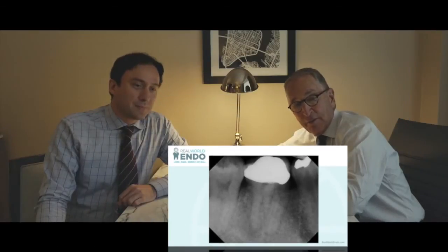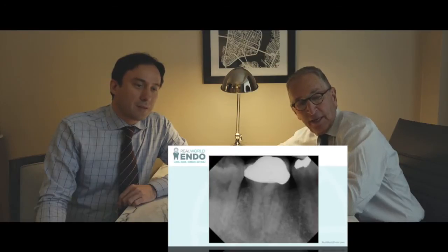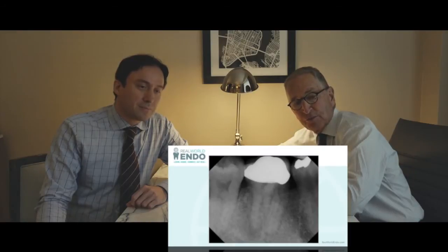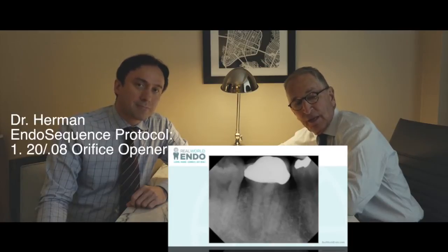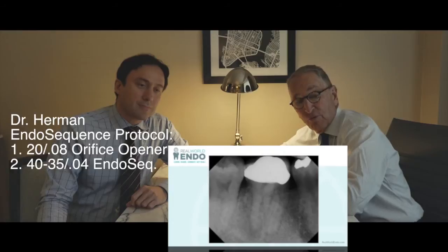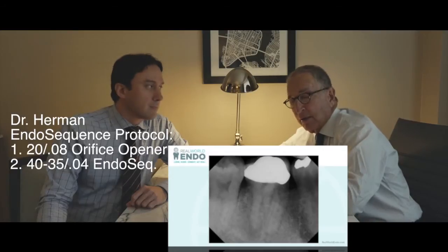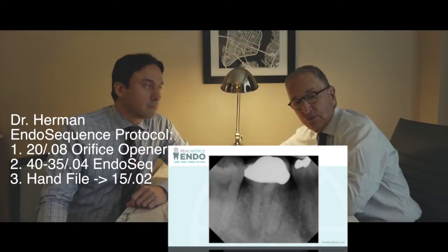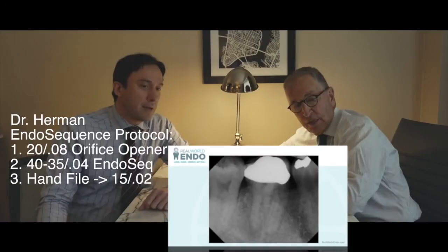It's just a case where we take a pre-op x-ray. We can see that we have multiple canals here, at least four. It seems like you've got a crown and a fairly gnarly calcified tooth there. So we decide to go in, gain access. We like straight-line access, and then we start our EndoSequence protocol. What we do is open up the orifice with a 20.08 race file, and then go down to about halfway with approximately a 40 or a 35.04. I'm very much involved with all fours, and when we get halfway down, my protocol is to go down with a hand file, usually to at least a 15.02. And then I go and use crown-down preparation using the EndoSequence.